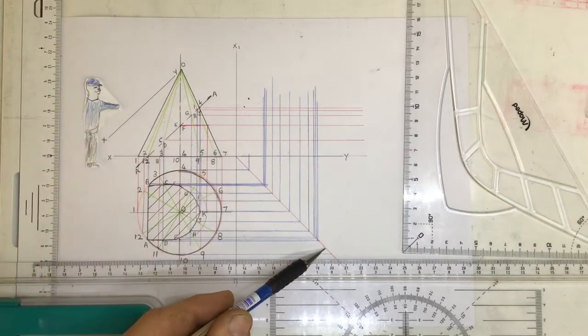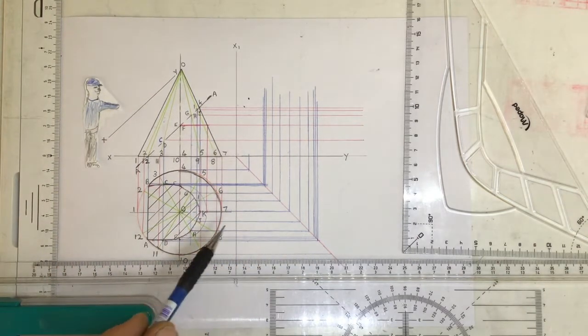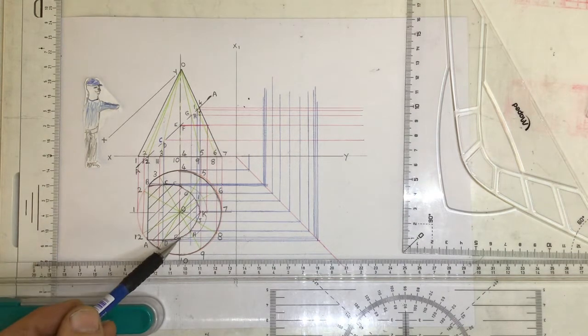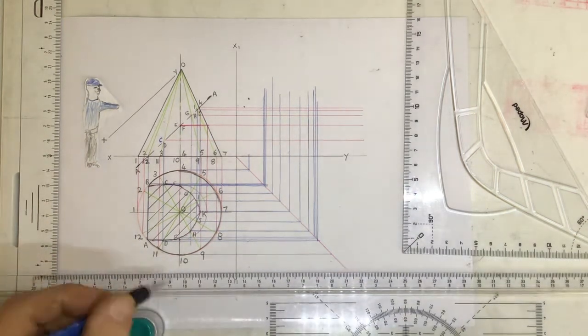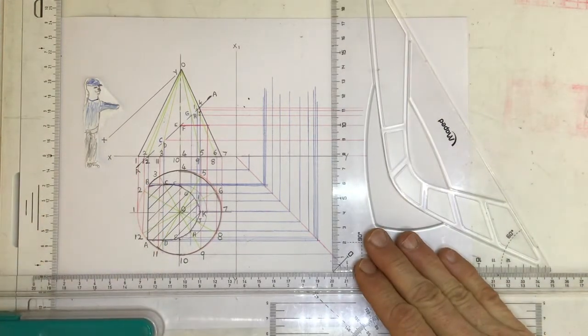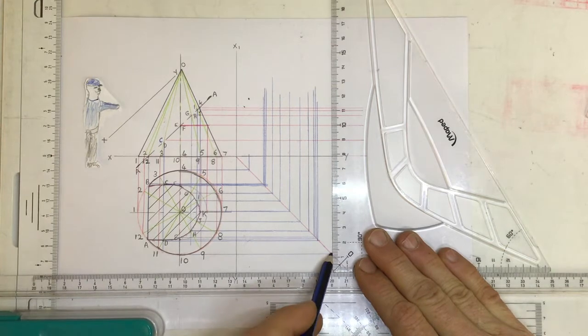You'll see that I drew a 45 degree line in over here, and I have transferred all of the points of the cutting plane across. I've also taken 0.10 and 0.4 across to the cutting plane, I mean to the 45 degree line.